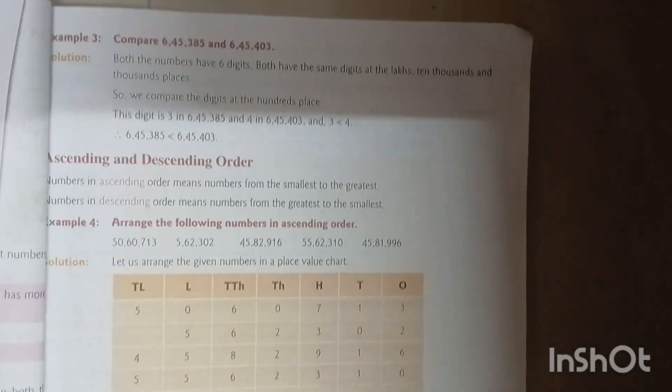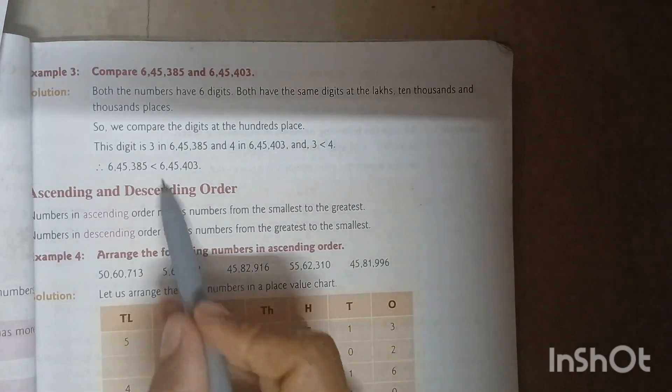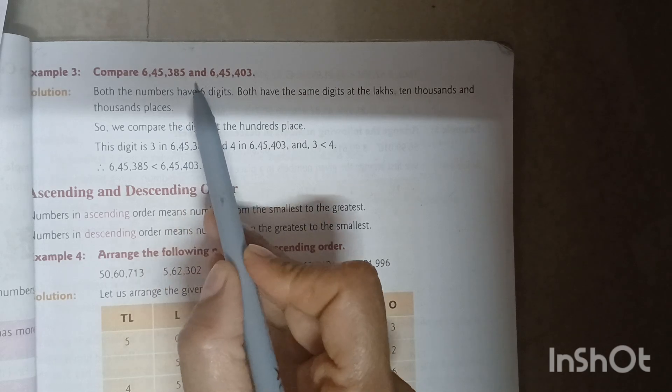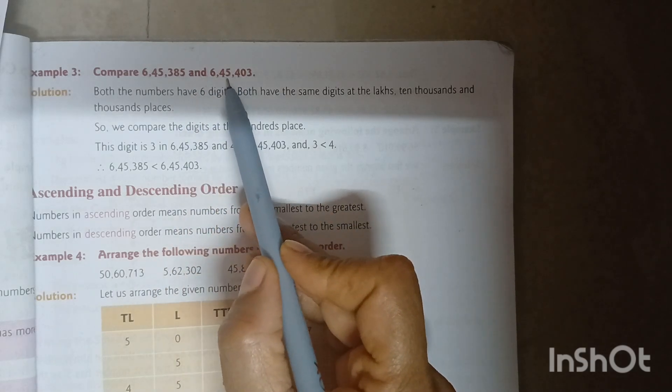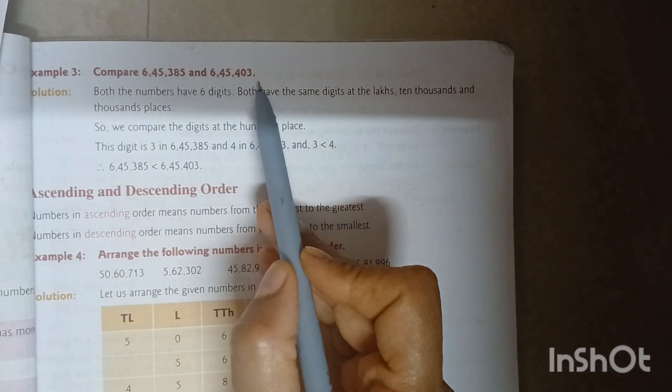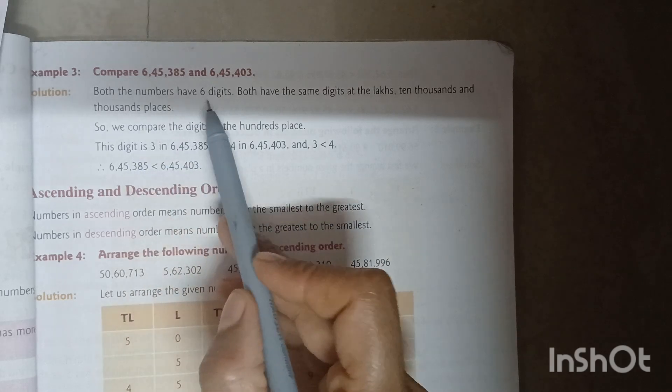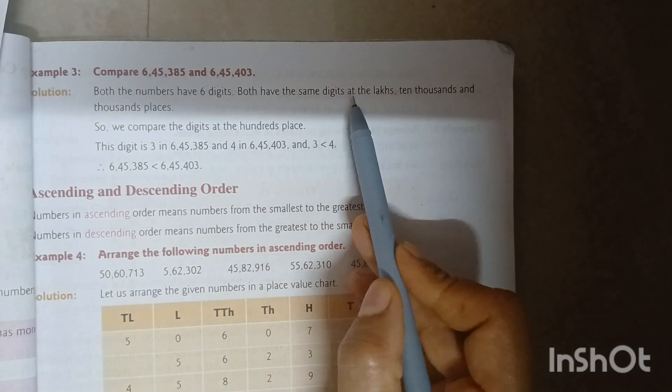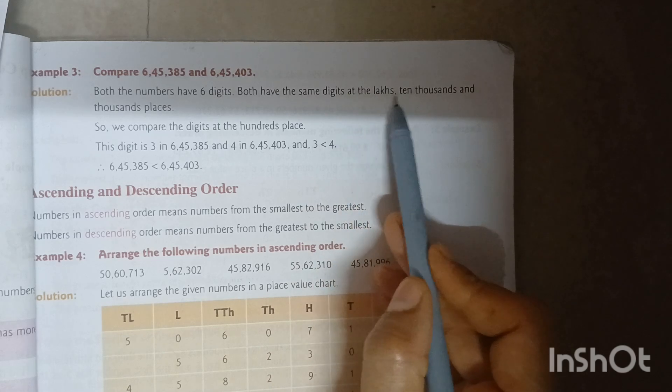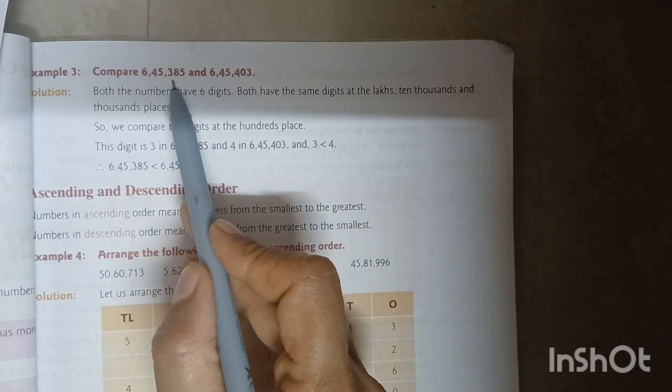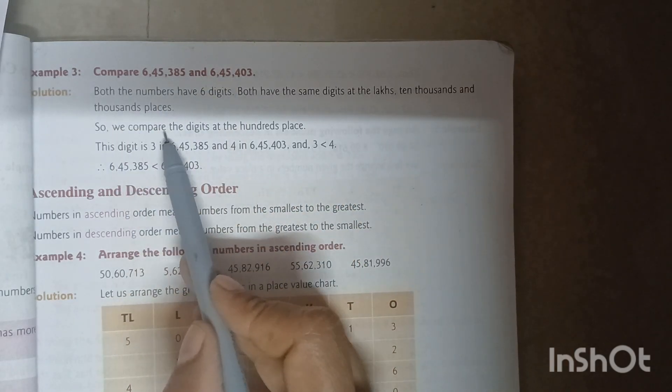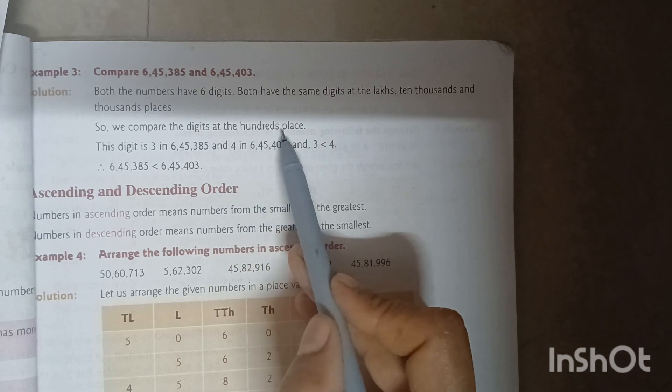Example 3: Compare 6,45,385 and 6,45,403. Both numbers have 6 digits. Both have the same digits at the lakhs, ten thousands, and thousands places. So we compare the digits at the hundreds place.